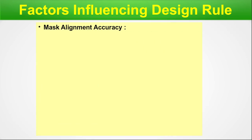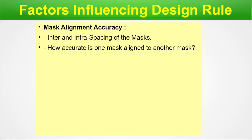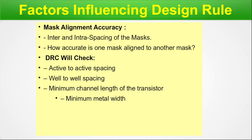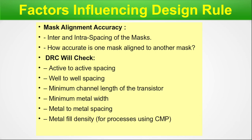Factors influencing the design rule include mask alignment accuracy — how accurately one mask is aligned to another. The DRC engine checks: active-to-active spacing, well-to-well spacing, minimum channel length of the transistor, minimum metal width, metal-to-metal spacing, metal fill density for CMP processes, and ESD and IO rules. All these things are verified through the design rule check.